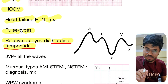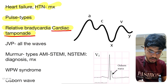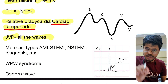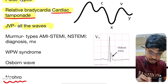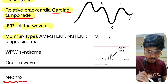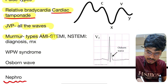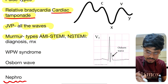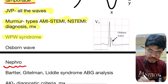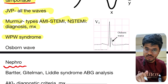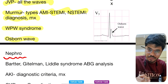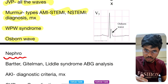Cardiac tamponade is a very important topic. JVP — all the waves — is a very very very important topic. Murmurs and all the types. AMI — STEMI and NSTEMI — diagnosis and management. WPW syndrome — diagnosis and management. Osborne wave, seen in hypothermia.